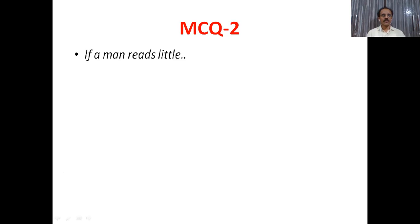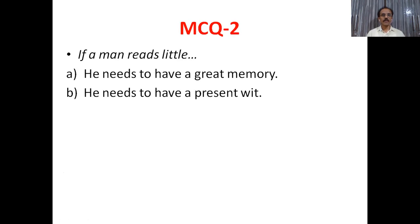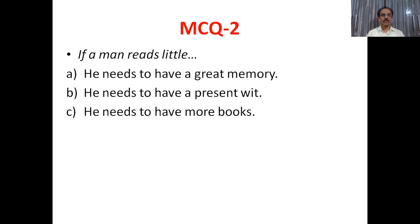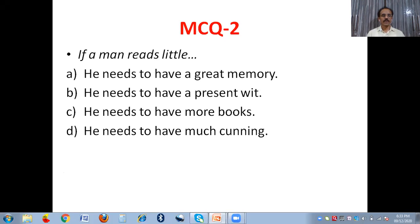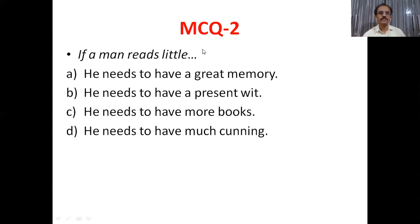Question two: if a man reads little, what happens? A — he needs to have a great memory. B — he needs to have present wit. C — he needs to have more books. D — he needs to have much cunning. The answer is D: if a man reads little, he needs to have much cunning.